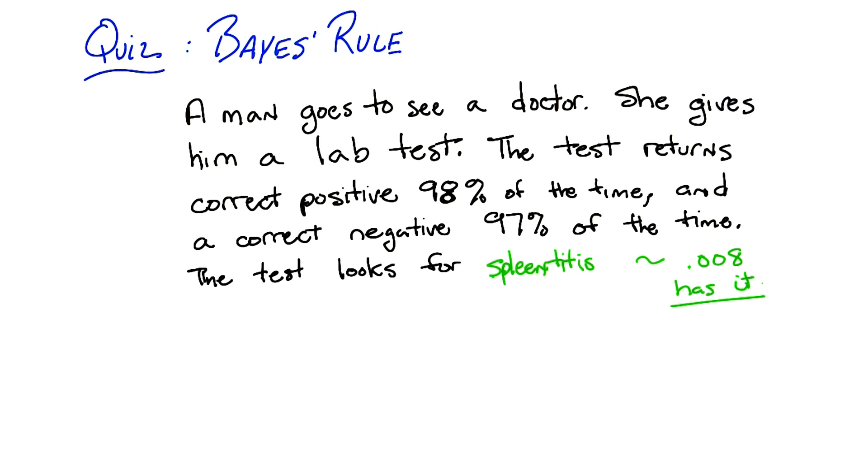Can I tell you that spleen titus appears zero times in Google? So it really is quite rare. But what does Google know?